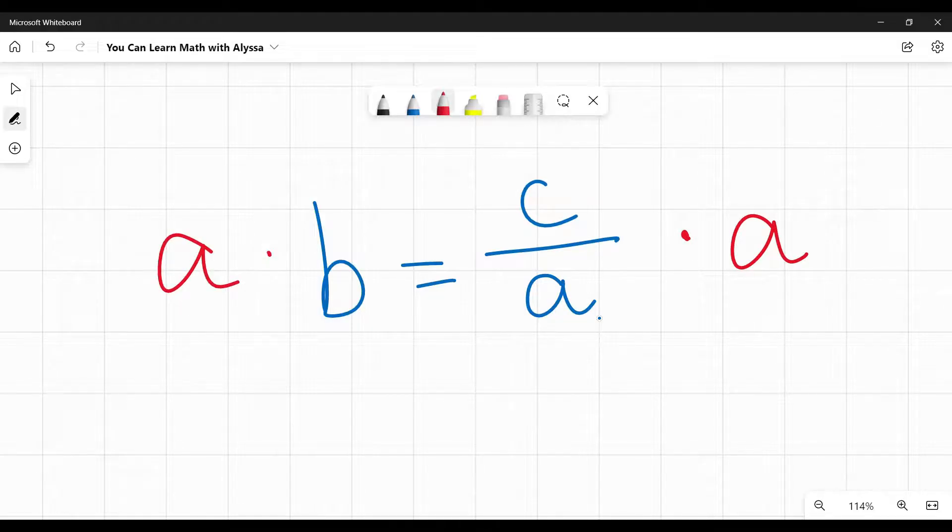So I'm going to multiply both sides by a. c being divided by a and then multiplied by a, that undoes that division to multiply by a. So on the right, I just have c, and on the left, I have a times b, and I've solved for c.